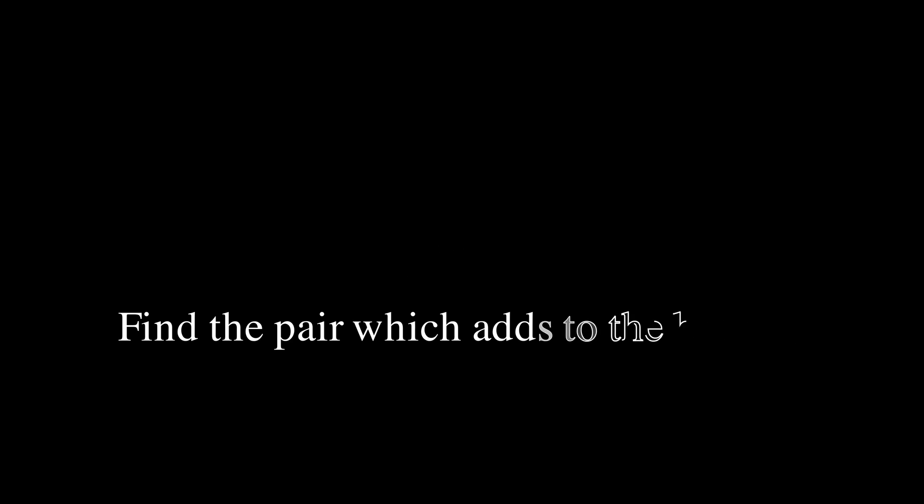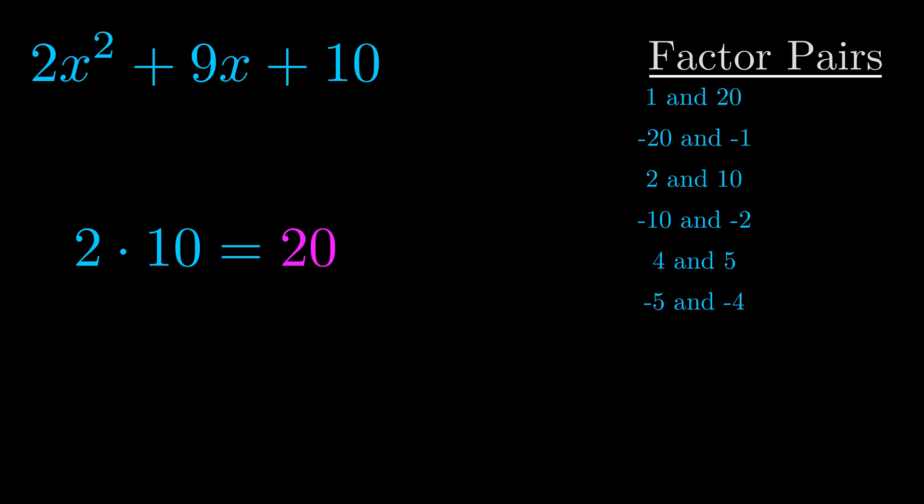The b value is the coefficient on the x term. That's the middle term, the one that we haven't done anything with yet. And really this is the only factor pair that we need.